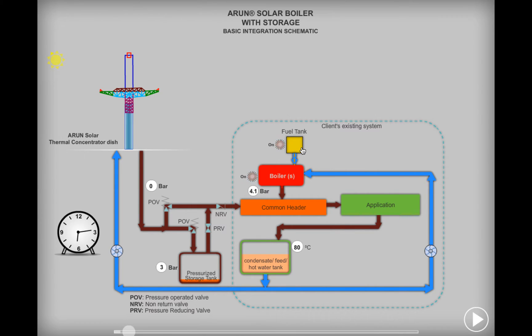This steam is then fed to a common header which is further fed to various processes or applications in the plant. The basic aim of the control mechanism in the scheme is to deliver steam to the existing boiler header and then deliver excess steam to the storage tank. This stored energy can then be used during non-solar hours.